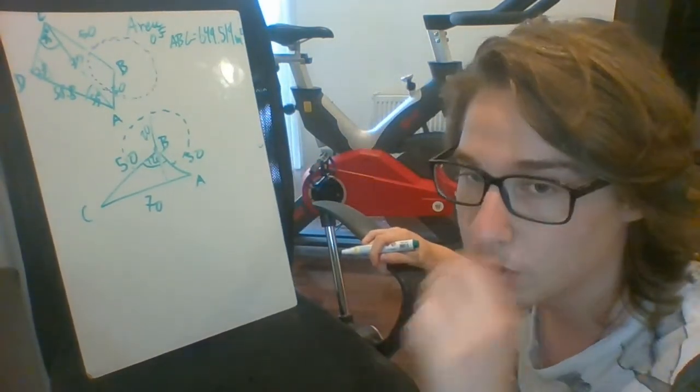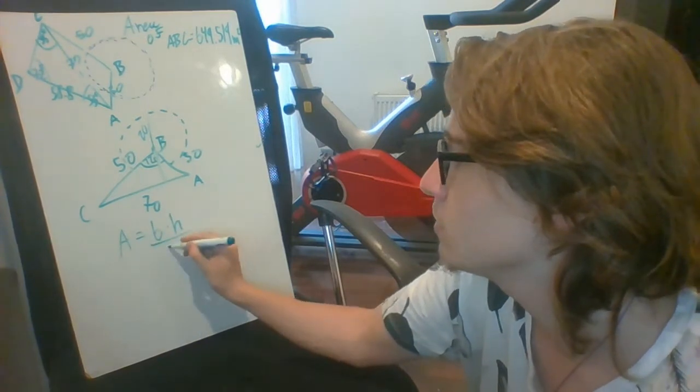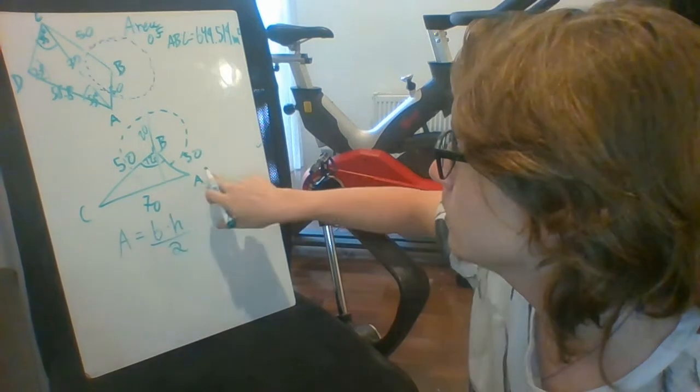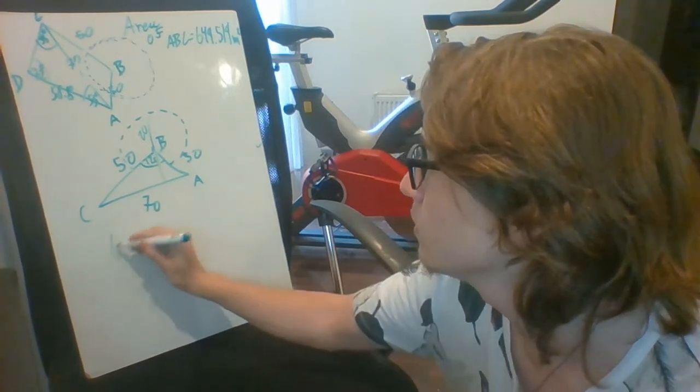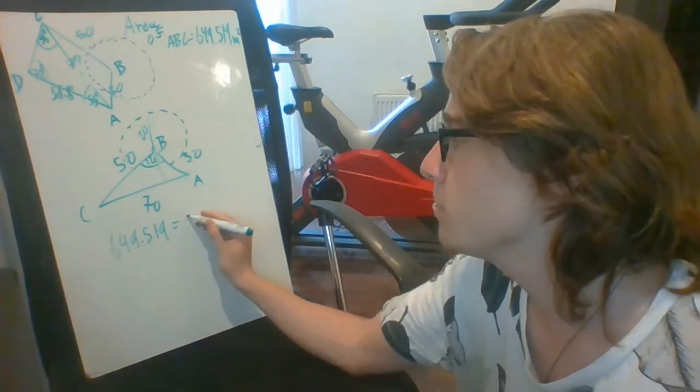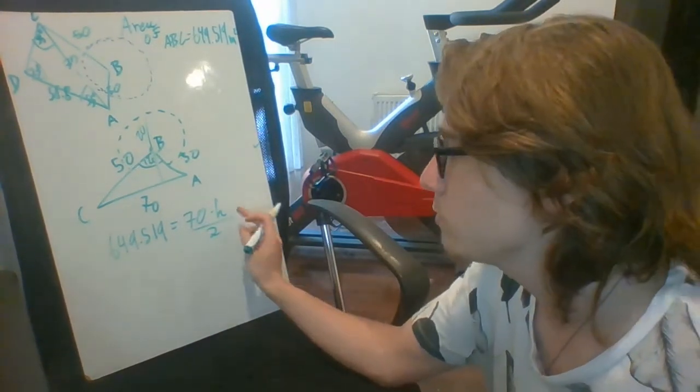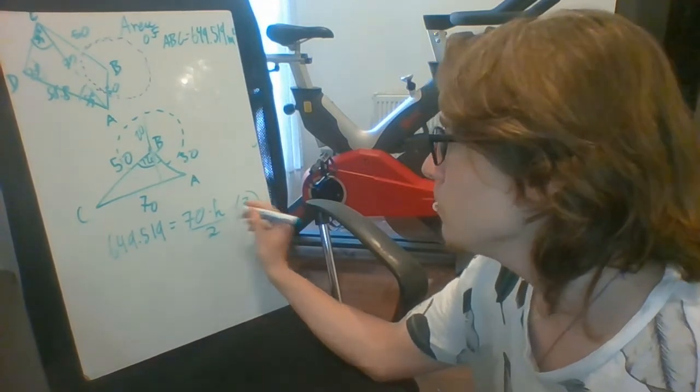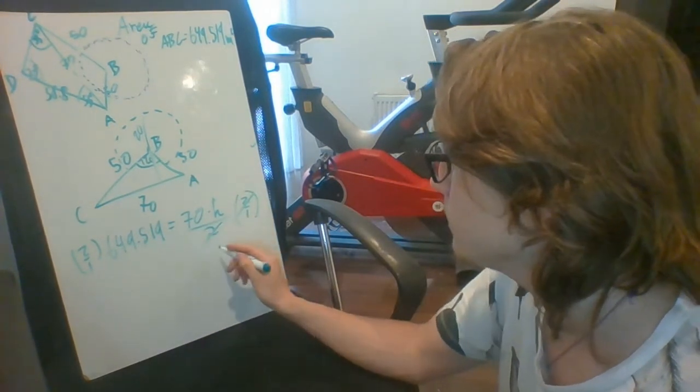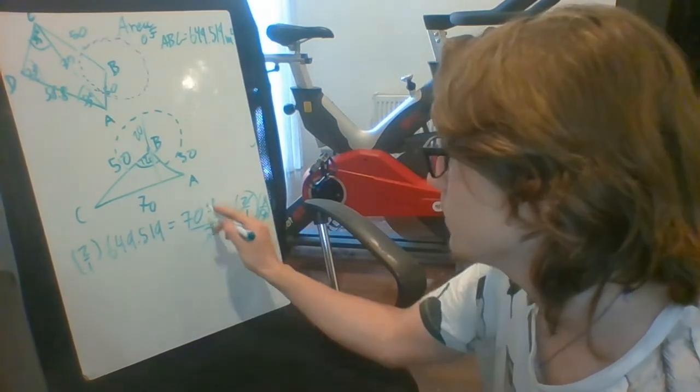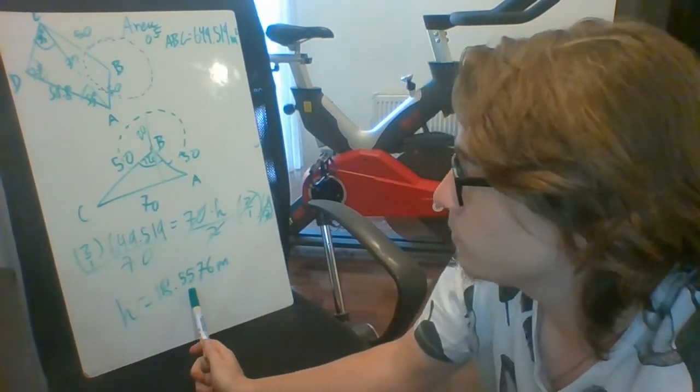The way we can get the height is using the formula for the area of a triangle. The area of a triangle is going to be base times height divided by 2. Since we got the area of the triangle ABC on a previous part, we can plug it in. We're going to have 649.519 equals the base, which is 70, times the height that we do not know, and we divide it by 2. Now we want to get h alone to figure out the value of h. We multiply both sides by 2 to get rid of this guy, it cancels out. We're also going to divide by 70. Once that calculation is done, we have that the height is 18.5576 meters.